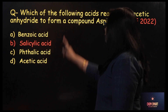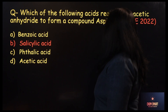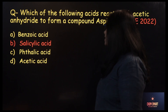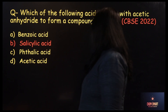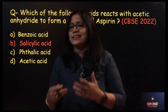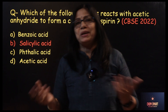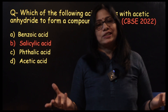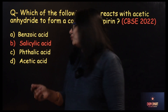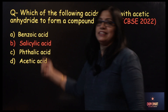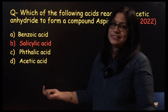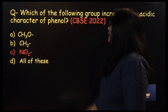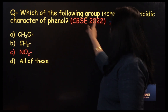Which of the following acids reacts with acetic anhydride to form the compound aspirin? This is a repeatedly asked concept in recent papers. The answer is salicylic acid.